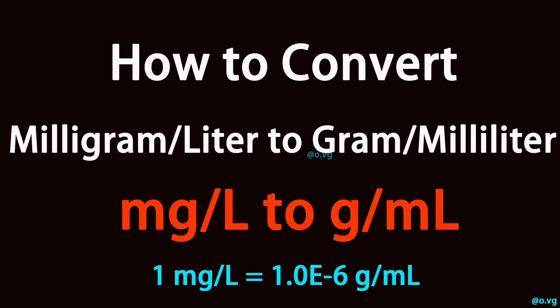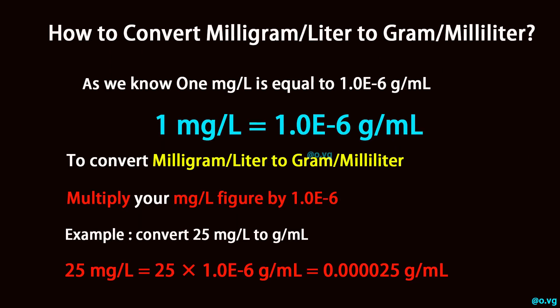How to convert milligram per liter to gram per milliliter. 1 milligram per liter is equal to 1.0 times 10 to the power of negative 6 gram per milliliter.